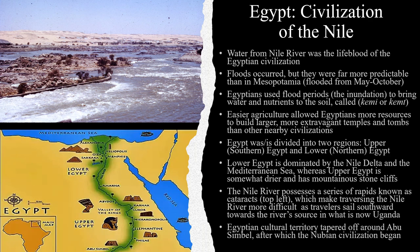Put simply, ancient Egypt was the civilization of the Nile River. The Nile River was the lifeblood of the Egyptian civilization. It provided water, hydration, and transportation. The Nile River would flood, but its floods were far more predictable than the floods of the Tigris and Euphrates rivers in Mesopotamia. The Nile River flooded seasonally, usually from about May to about October. The Egyptians used these flood periods, called the inundation, to bring water and nutrients to the soil, which they called Kemi or Kemet.